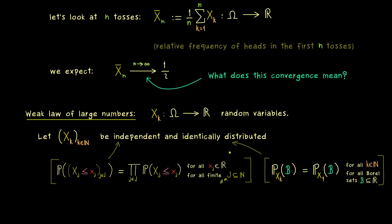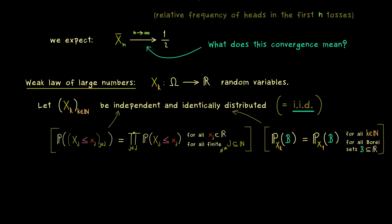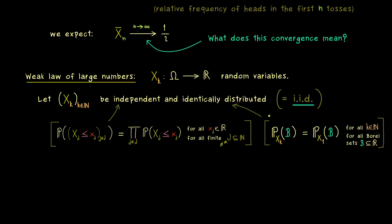So we have two important requirements for the random variables: independence and identical distribution. This assumption is so important and occurs so often that we have a short notation for it — we simply call it iid. So for the weak law of large numbers, we need the iid assumption for the random variables.